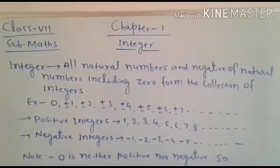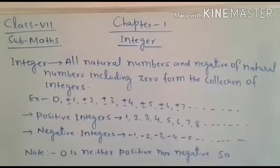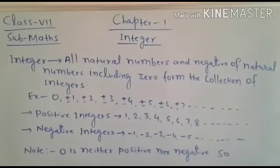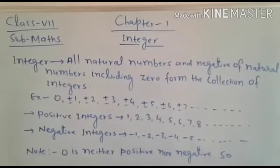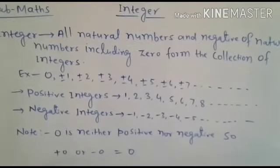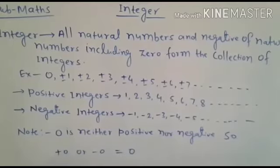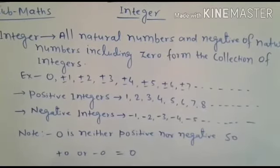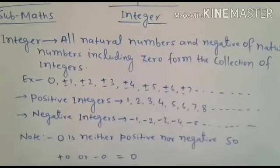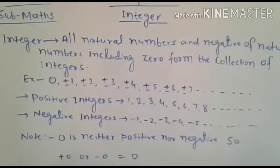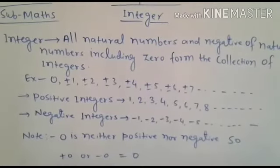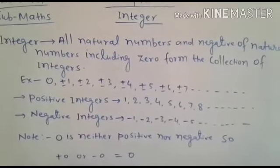So you have zero in integers. What do you think about zero — is it positive or negative? The answer is: zero is neither positive nor negative. Because if we write plus zero or minus zero, that will be zero. So the notable point is zero is neither positive nor negative.